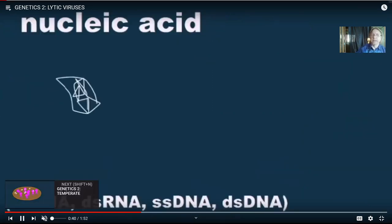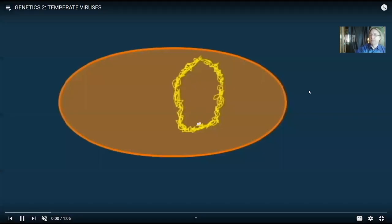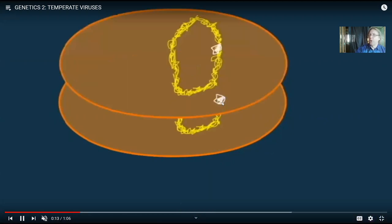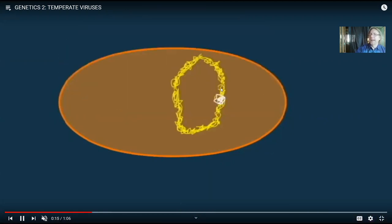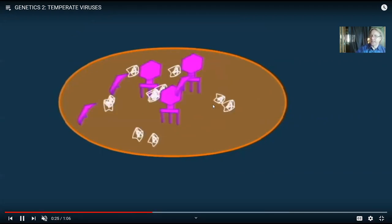Other viruses are called temperate viruses, where instead of always bursting the cell, sometimes their nucleic acid then gets inserted in the host genome. So this is a bacteria, and it has a circular chromosome. And so then the viral nucleic acid is now part of the host chromosome. And every time the bacteria then replicates itself, then it now replicates the viral nucleic acid along with it.